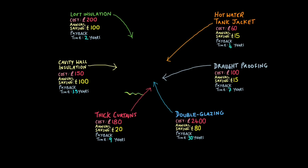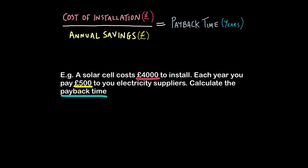But in exams, they won't necessarily give you nice, tidy little data packages like this. More likely, you'll have a written question like this. So it says a solar cell costs £4,000 to install. Each year, you pay £500 to your electricity suppliers. Calculate the payback time.